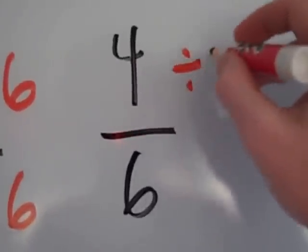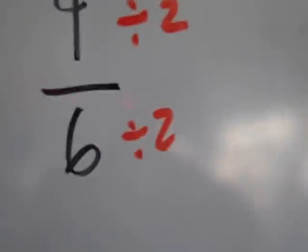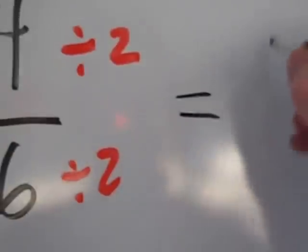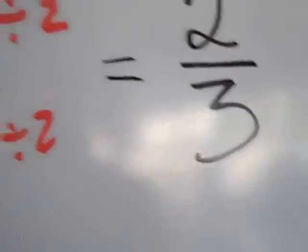So I'm going to divide again. They're both divisible by 2, so I'm going to divide both by 2. 4 divided by 2 is 2, and 6 divided by 2 is 3.